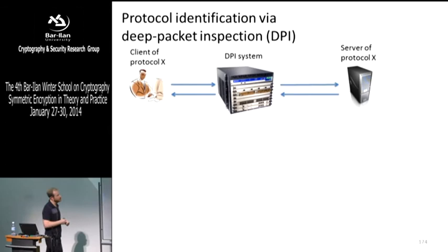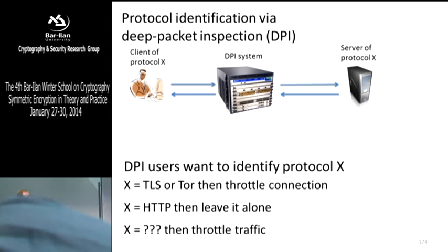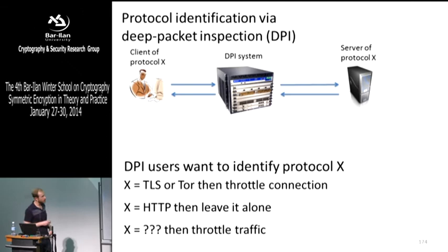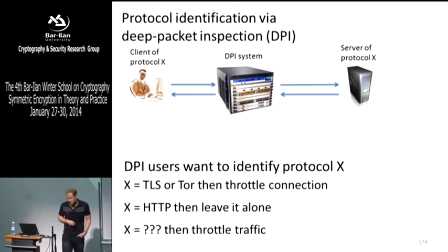Where does this go on? Pretty much all over the world — ISPs detect BitTorrent and throttle it. Our motivating application was China and Iran, which are doing this to shut down TLS connections. In Iran for example they did shut down all TLS connections for a while, and started throttling when they detect the protocol. We have a DPI system that wants to identify protocol from packets, and if it's TLS or Tor they want to throttle or shut it down.